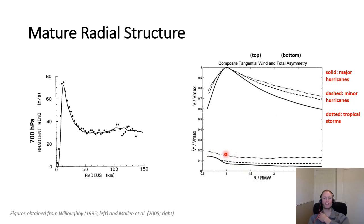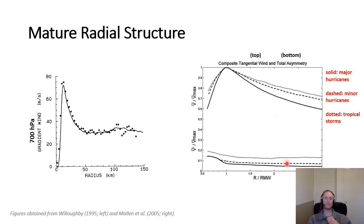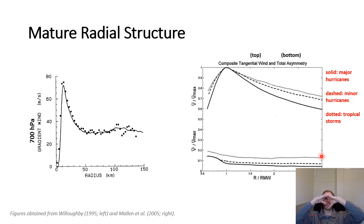In a composite view of tangential wind normalized by the maximum wind versus normalized radius, major hurricanes show a more rapid increase to the radius of maximum winds and a more rapid decrease outward compared to minor hurricanes or tropical storms. For major hurricanes, the asymmetry metric is around 0.1 or less, suggesting only about 10% deviation in wind speed as you go around the center. For tropical storms, there is 15–20% asymmetry near the center. More intense storms have more uniform wind distributions around the center.